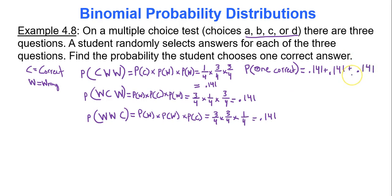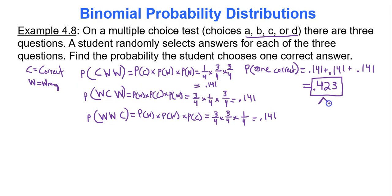Even though the correct answer was a different question in each scenario, we got the same probability each time. Adding the three probabilities together gives 0.423 — that is the probability of getting exactly one answer correct out of three. Knowing there are three possible outcomes, you could just calculate one probability and multiply by three. If I were building a full probability distribution, I'd have to compute four rows — which is very exhausting, so we need a shortcut.